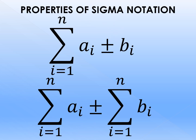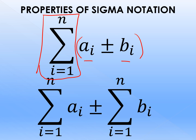Let's proceed with the second property. The second property states: summation of (a sub i plus or minus b sub i), where i starts from 1 up to n, can be split as summation of a sub i plus or minus summation of b sub i, both from i equals 1 up to n. We separate the two terms and copy the same lower and upper bounds for both summations. Whatever operation appears between the terms, we use that same operation between the two separate summations.